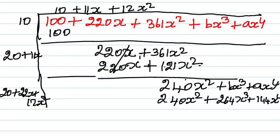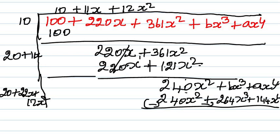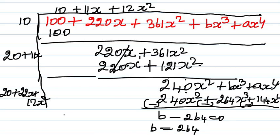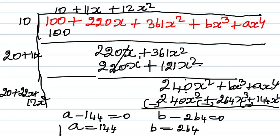Minus — so for minus, we can start with minus. Then b minus 264 equals 0, so b equals 264. Then a minus 144 equals 0, so a equals 144. Then a value is 144, b value is 264.